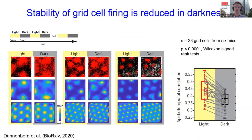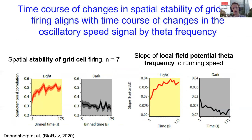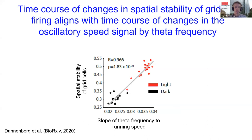Grid cells are important for spatial memory, which raises the question: what is the time course of changes in grid cell stability after changes in visual inputs? We analyzed grid cell stability as a function of time and demonstrated that changes in grid cell stability show a fast and a slow component of change after transitioning between light and dark conditions. This suggests that grid cells integrate velocity signals over time. Intriguingly, the time course of changes in grid cell stability almost perfectly aligned with the time course of changes in the local field potential theta frequency versus running speed relationship.